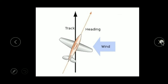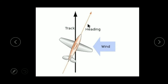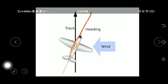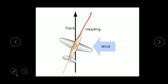Heading — I will explain it with a diagram. If this is your aircraft, it has a front axis. The direction in which the tip of this front axis points — that is called Heading. So if the aircraft is pointing in this direction, that becomes its heading.